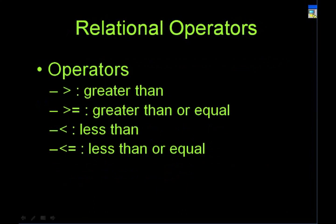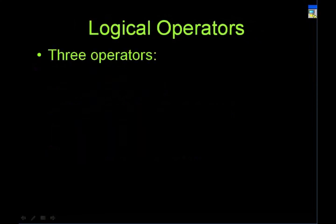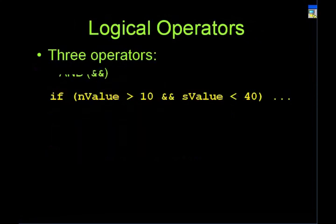You have relational operators — greater than, greater than or equal, less than, less than or equal. The difference from Scheme is how you use them: in Scheme you'd write '(> a b)', but in Java you use normal infix notation — 'a > b' with the symbol in the middle. Then you have logical operators. You can check if n is greater than 10 AND s is less than 40 using '&&'. The '||' operator means if either condition is true. The '!' operator inverts the value — if a condition is true, adding '!' makes it false, and vice versa.